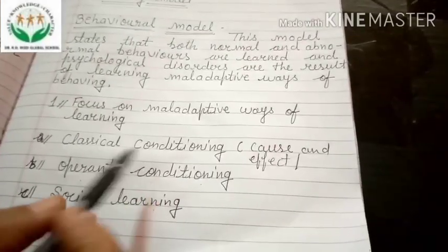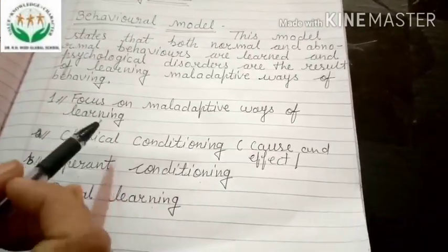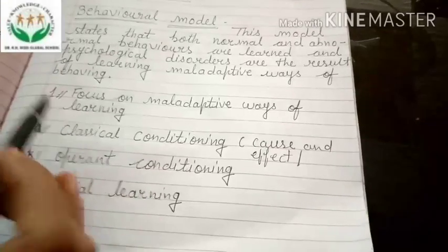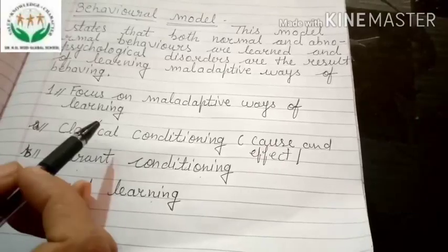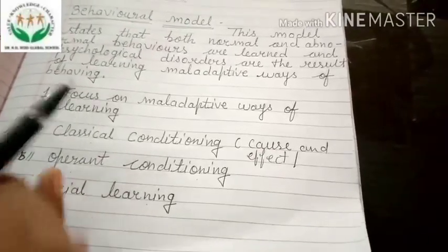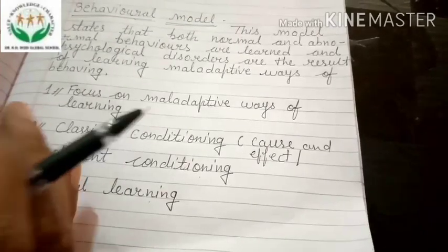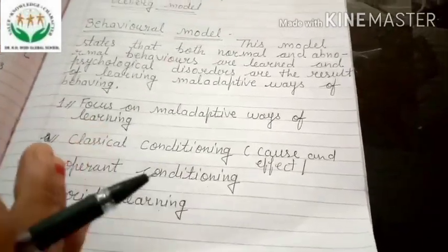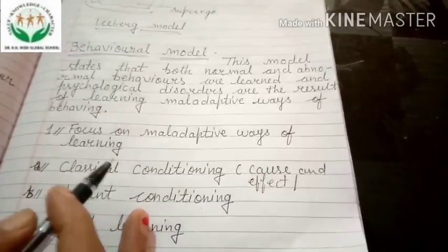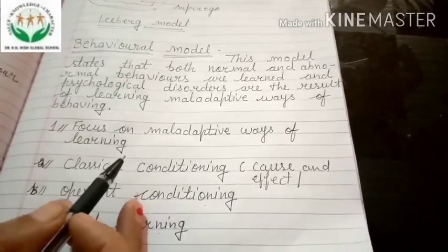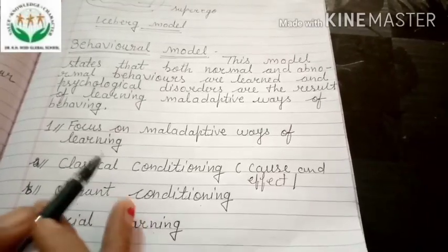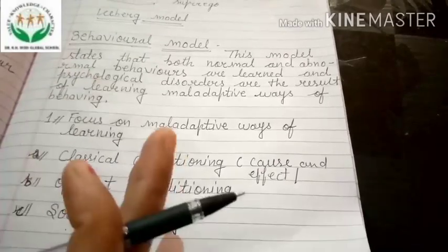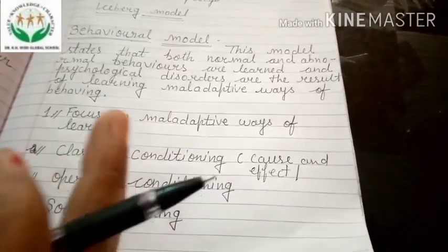Classical conditioning is a form of learning whereby a conditioned stimulus (CS) becomes associated with an unrelated unconditioned stimulus in order to produce a behavioral response known as a conditioned response. Pavlov experimented with a dog. He proved that when we expose a person or animal to a stimulus, we get a natural response.